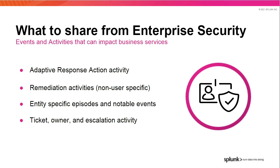IT operations can also benefit from receiving specific information from Enterprise Security. Adaptive response actions can be the cause of changes to ITSI KPIs and episodes and can help IT operations determine if they need to take additional action. If other remediation activities have been taken against IT infrastructure, this is another piece of contextual information that helps IT reduce MTTR of events. Knowing whether the security team is looking at the same entities as you are can be hugely helpful to IT ops and helps get the right resources engaged to solve problems. IT operations can also use a subset of security ticket information for reporting and incident updates to ensure that leadership is aware of who is working on what.